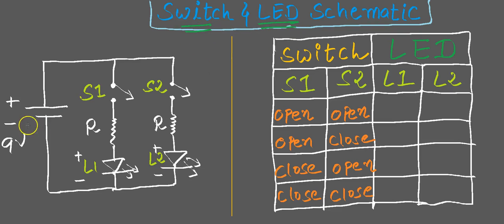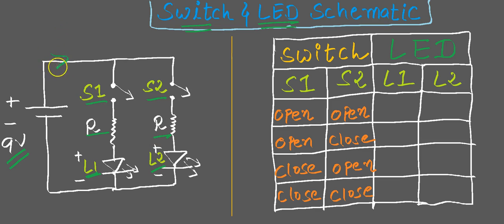Let us take a look at another circuit with two switches. I have two switches here, S1 and S2, and a battery as you can see on the diagram. Because there are a couple of paths for current to flow, this circuit is a parallel circuit. When switch one is closed, current flows through this path; when switch two is closed, current can flow through that path as well. This is a parallel circuit because there is more than one path for current to flow.